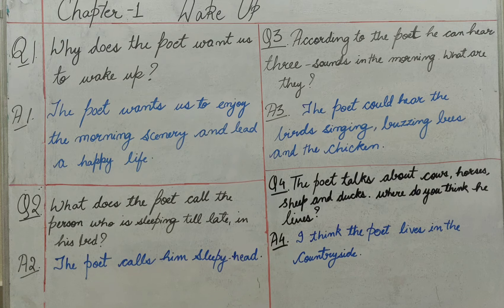First of all, I will tell you that you have to do new words which are given at the end of the poetry: Buzzing, Hurry Up, Lovely, Sleepy Head, and Tiniest. So these are the new words. You have to write them thrice, write the word meanings thereafter, make sentences, and then you will start the question and answers.